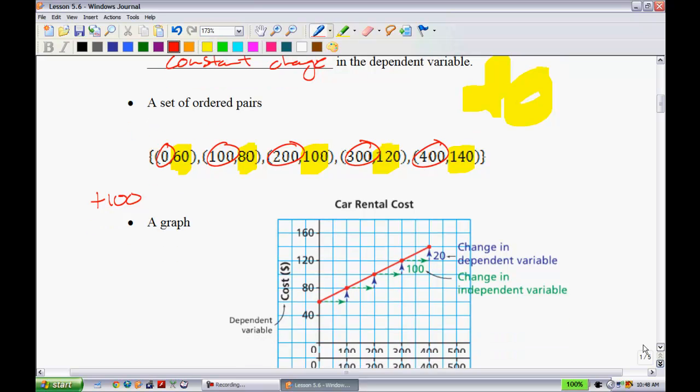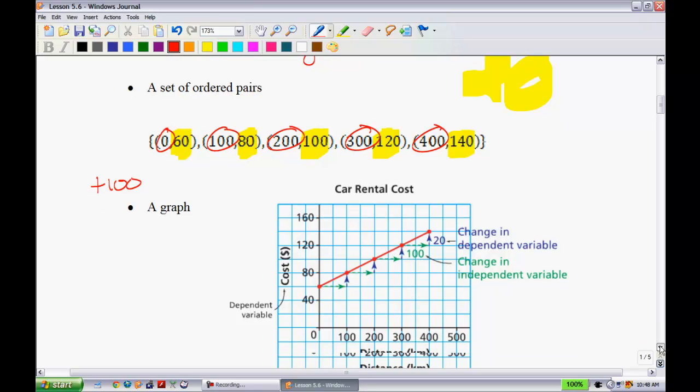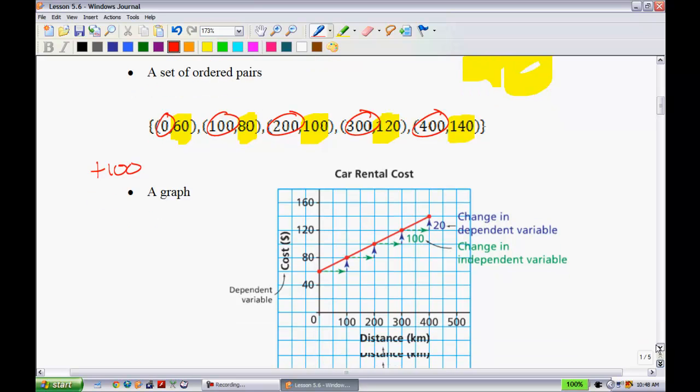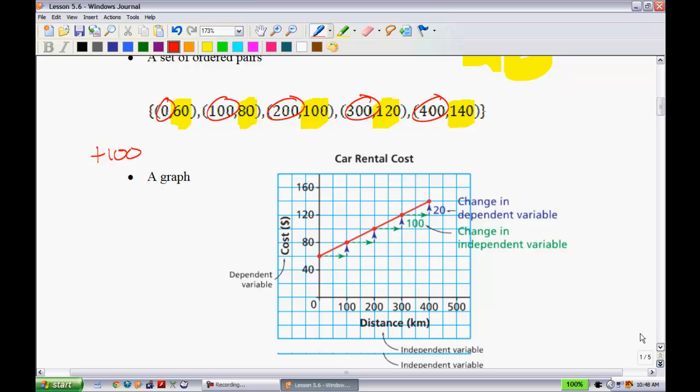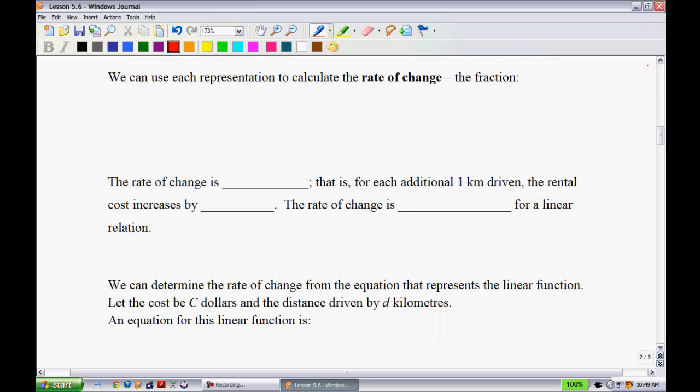When you have a graph, it's very easy to figure out if something is linear or not because it just makes a line like so. If you ever see a line like that, you can assume it's a linear relation. They show you here that the change in the dependent variable is going up by 20, and of course the change in the independent is going up by 100.